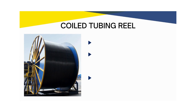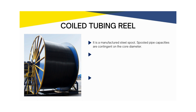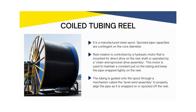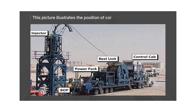Next is the coiled tubing reel. It is a manufactured steel spool, and spooled pipe capacities are contingent on the core diameter. Reel rotation is controlled by a hydraulic motor that is mounted for direct drive on the reel shaft or operated by a chain and sprocket drive assembly. This motor is used to maintain a constant pull on the tubing and keep the pipe wrapped tightly on the reel. The tubing is guided onto the spool through a mechanism called the level wind assembly to properly align the pipe as it is wrapped on or spooled off the reel. This picture illustrates the position of the coiled tubing reel.